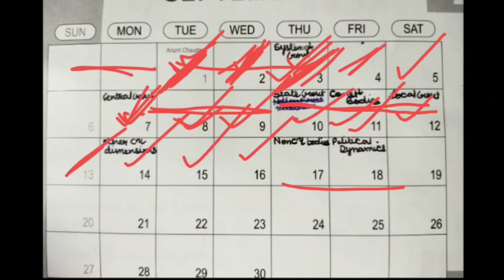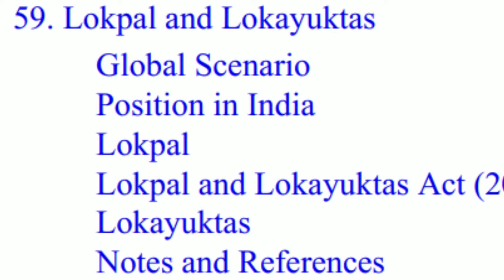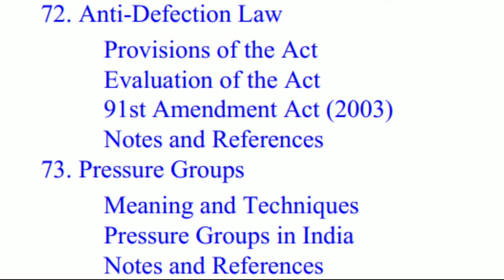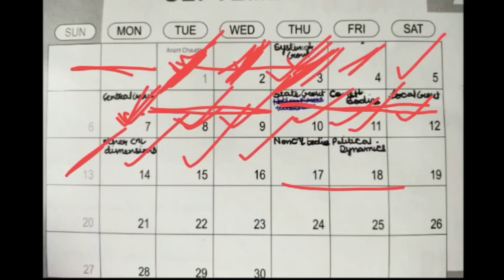For day seventeen, you complete chapter 59 — Local — finishing off the non-constitutional bodies portion. Along with that, you do Anti-Defection Law and Pressure Groups. Please don't underestimate Pressure Groups — there was a question on it in 2017. Don't skip these.